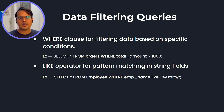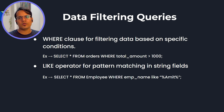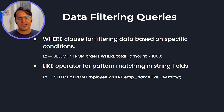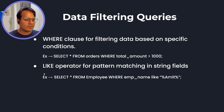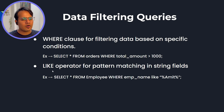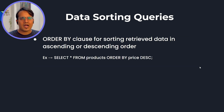Next are data filtering queries. Once you have your records or rows but want to filter them — for example, you don't want to fetch all records but only those matching certain criteria — we use two things: the WHERE clause and the LIKE operator. The WHERE clause is used to filter data based on specific conditions, and the LIKE operator is for pattern matching in string fields.